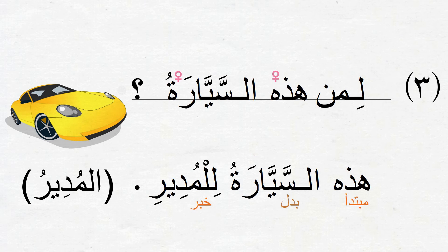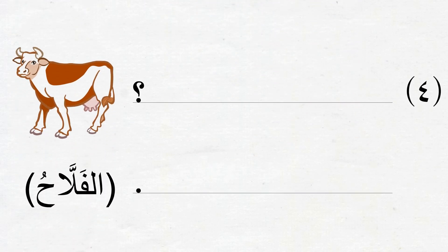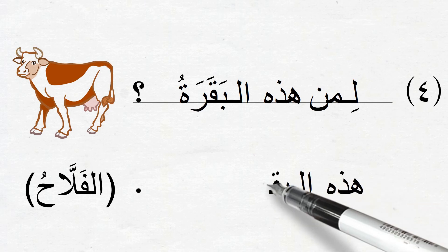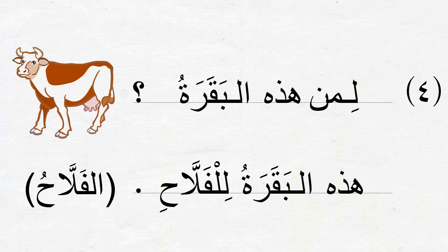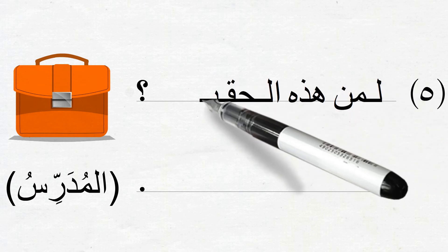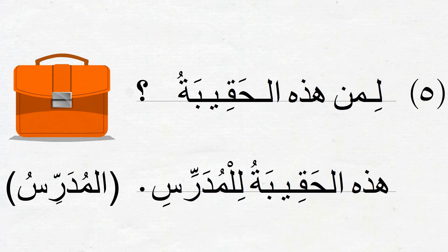Notice we are not analyzing all these sentences because they are all similar in structure. Part 4 is about البقرة, another مؤنث ism, so we ask: لمن هذه البقرة — whose is this cow. We see الفلاح in the parenthesis, so the answer is: هذه البقرة للفلاح — this cow belongs to the farmer. Part 5 is about الحقيبة. The question is: لمن هذه الحقيبة — whose is this bag. The ism in the parenthesis is المدرس, so the answer is: هذه الحقيبة للمدرس — this bag belongs to the teacher.